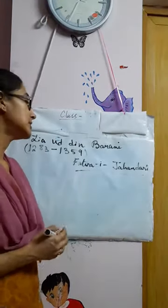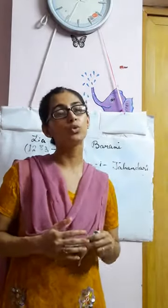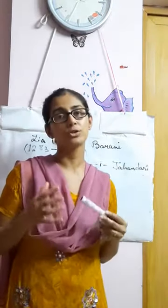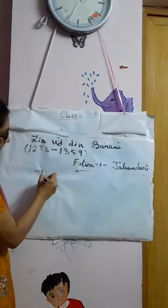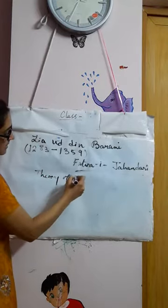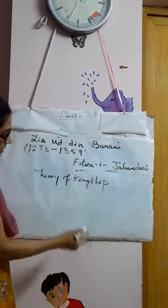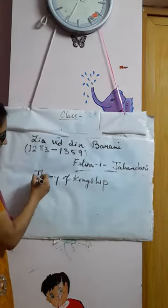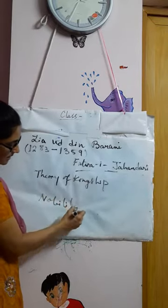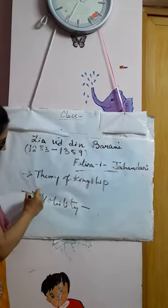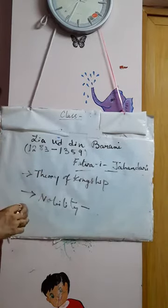In his book Fatwa-i-Jahandari, Barani gave emphasis to two particular aspects: one is the theory of kingship, and the other is the nobility. These are the two things he has dealt with in detail in this book.